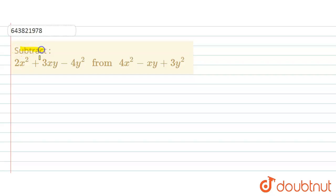The question says subtract 2x² + 3xy - 4y² from 4x² - xy + 3y². We are given to subtract 2x² + 3xy - 4y² from 4x² - xy + 3y².